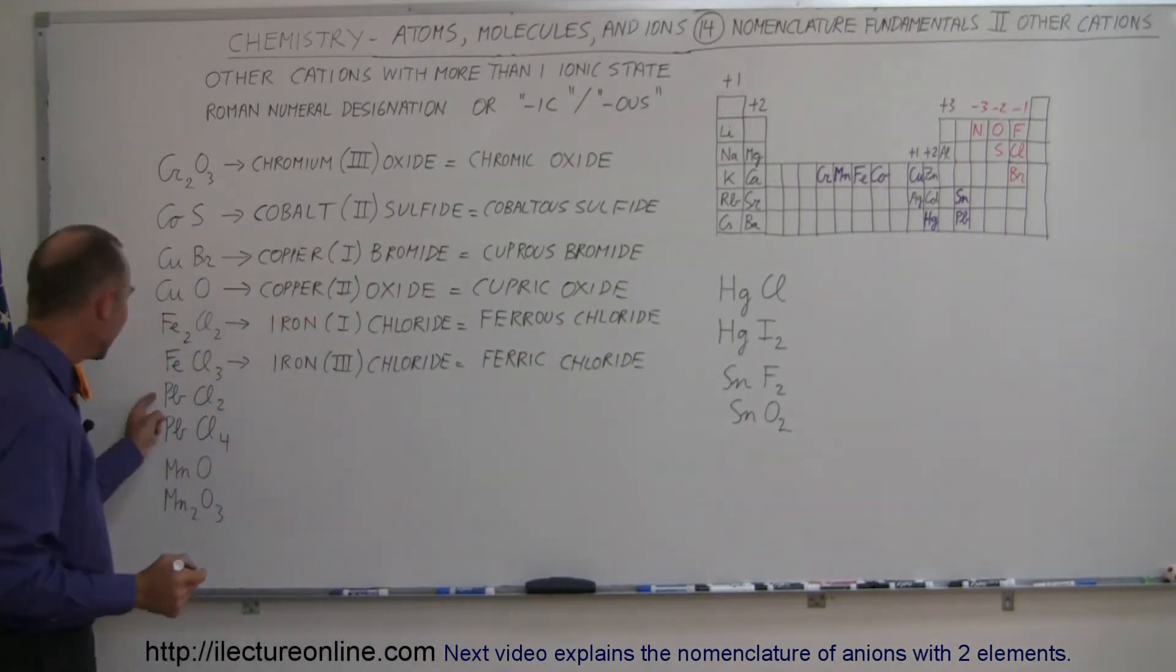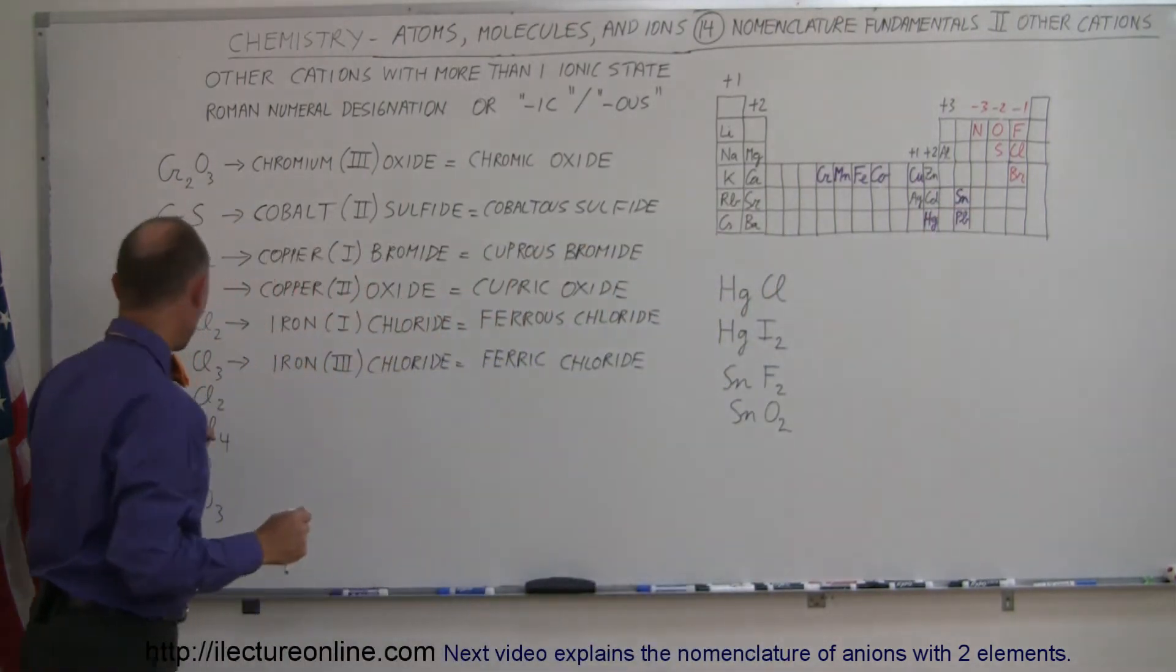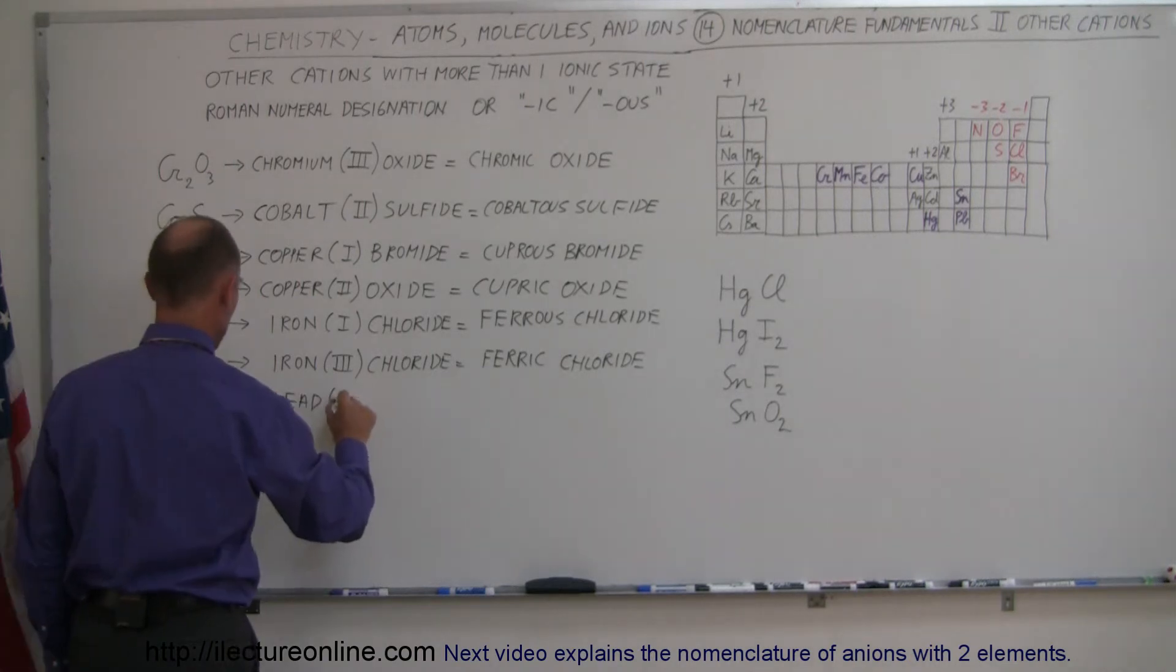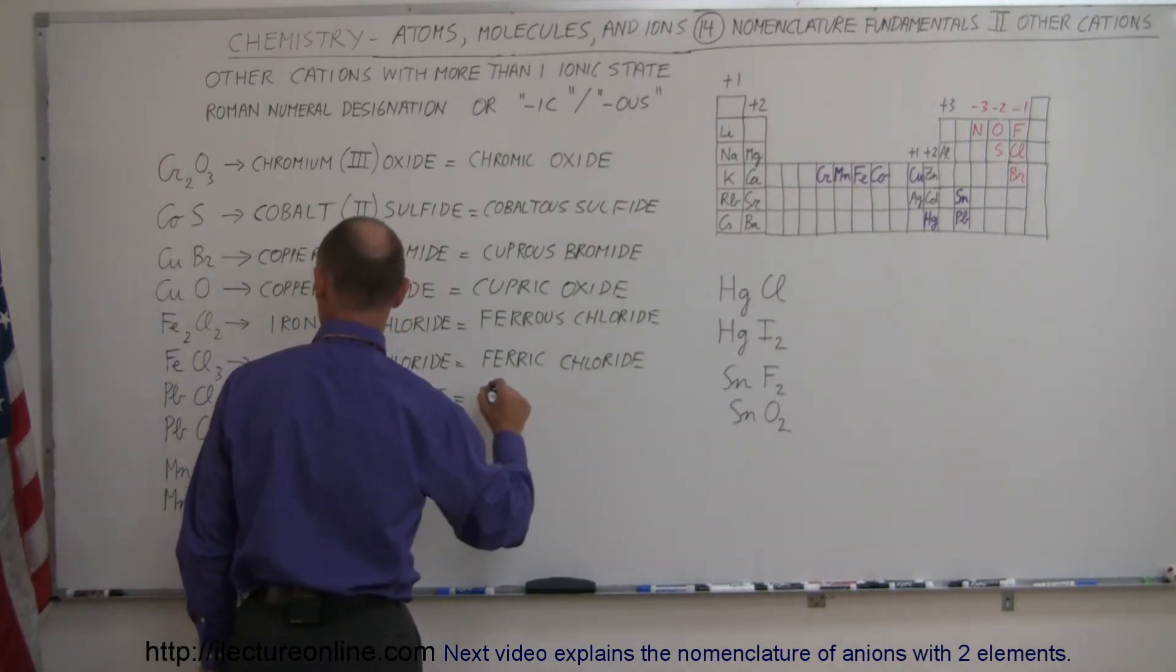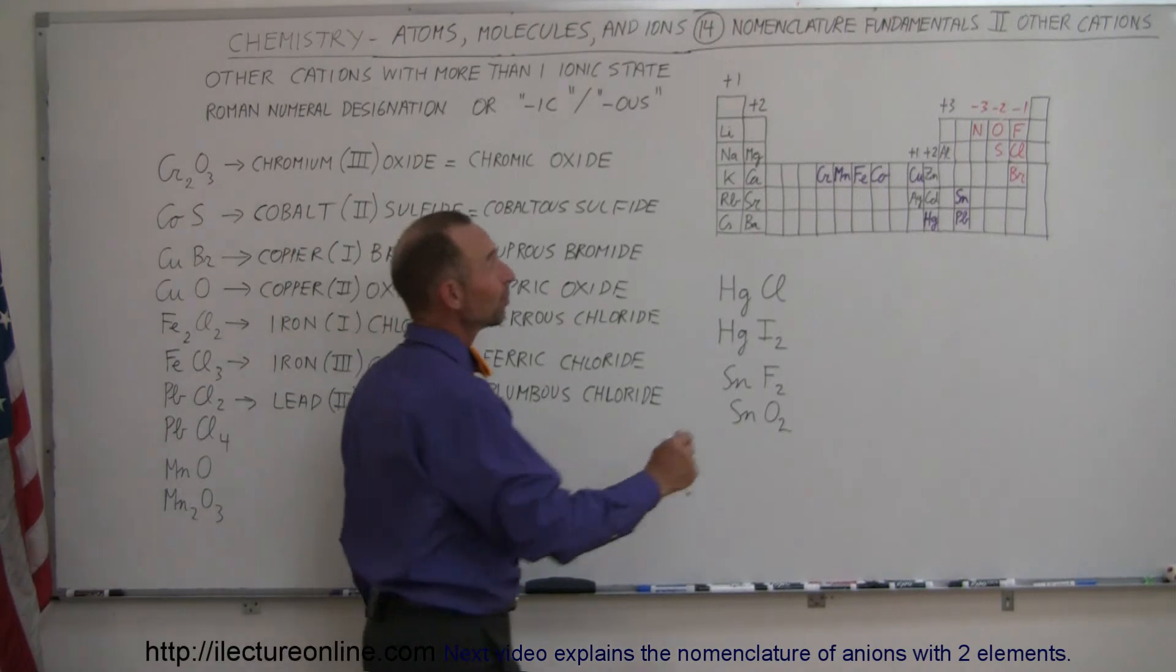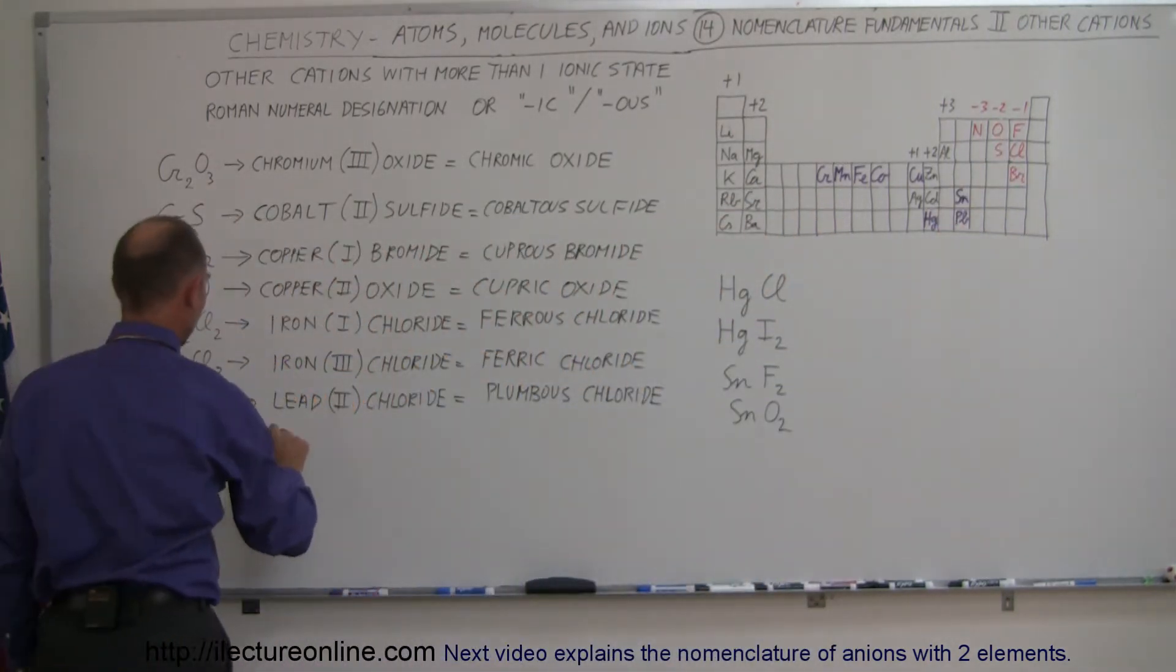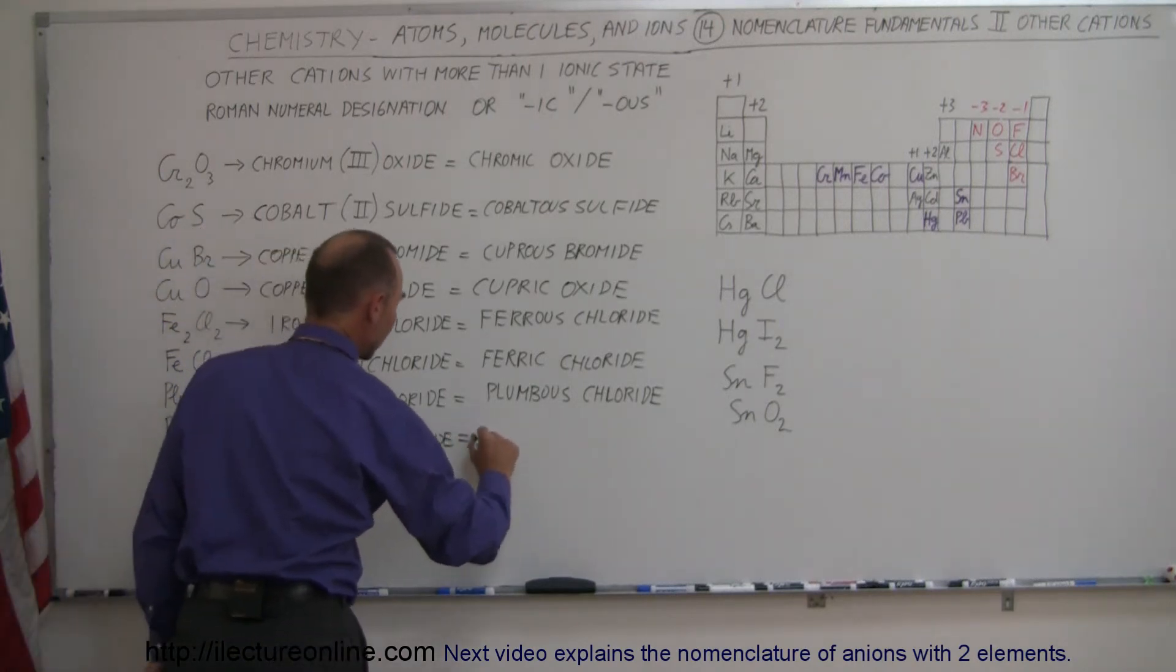Next we have lead and chlorine. Chlorine is minus one, we have two of them, that's minus two. That means lead has to be plus two, so this means lead two chloride. The Latin name for lead is plumbic, so that would be plumbous chloride. Next we have lead with chlorine, but we have four of them. Four times negative one is minus four, that means lead is a plus four, so this becomes lead four chloride or plumbic chloride.